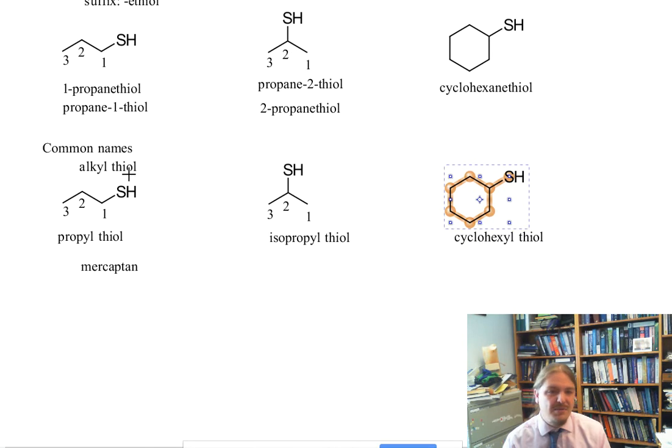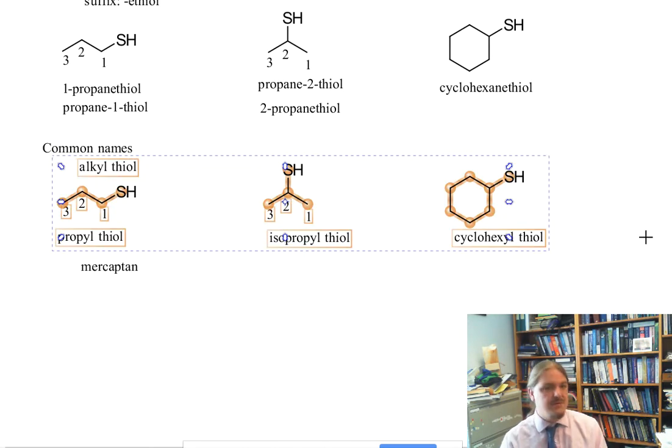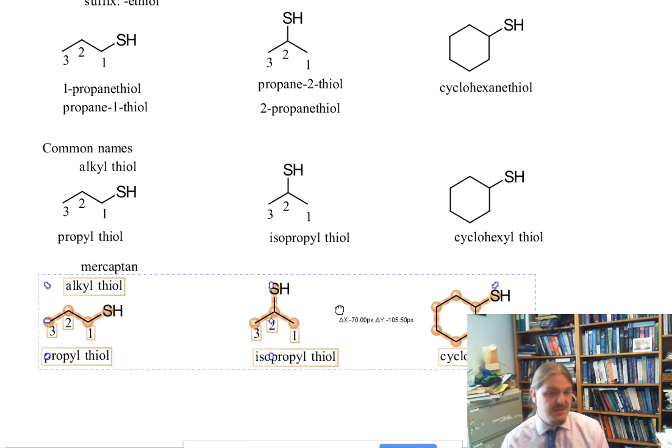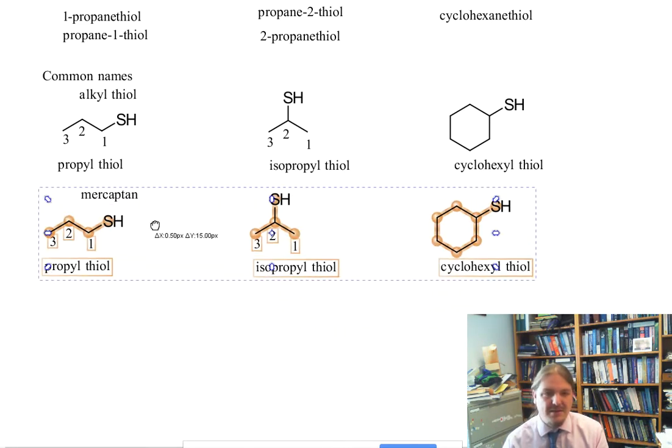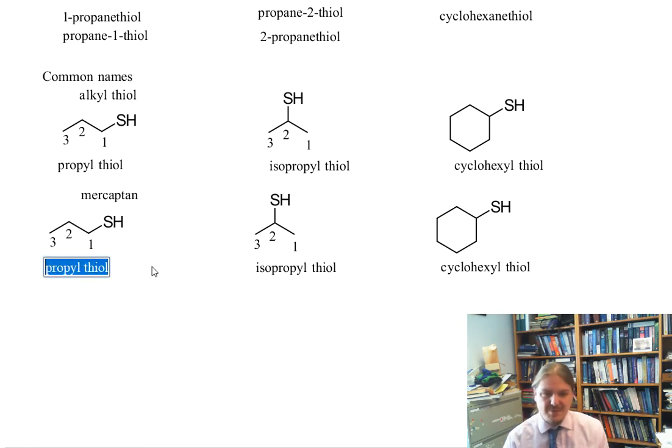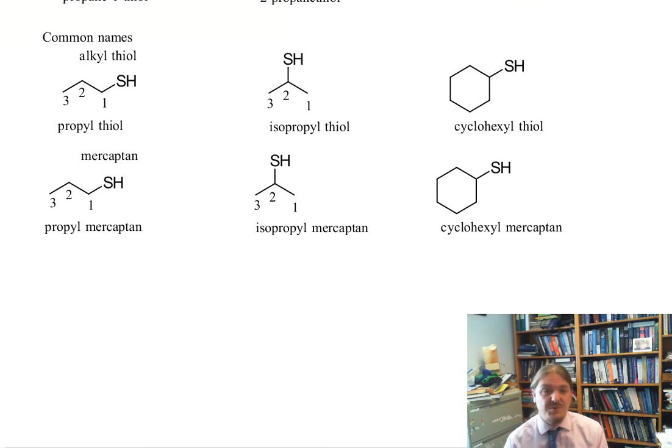An older name for thiols is this word, mercaptan. And I need to talk about mercaptan because mercaptan serves as the basis of one way of naming thiols as substituents. Let's use this mercaptan method. It's the same thing as saying propyl thiol, but we're going to say propyl mercaptan.